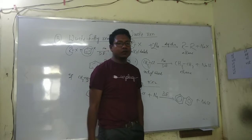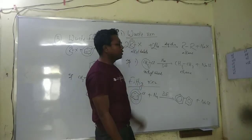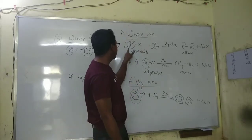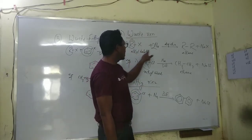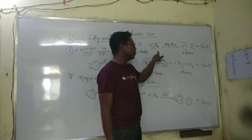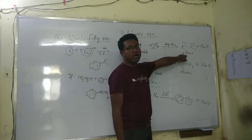The first NEM reaction is the Wurtz reaction. In the Wurtz reaction, alkyl chloride reacts with sodium in the presence of dry heat to form alkane.